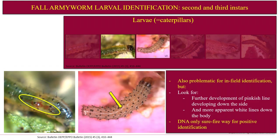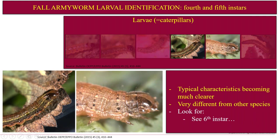Moving on to second and third instars, we see the development of those characters, primarily through the intensification of the pink banding down either side, and those white lines running up and down the body become a little more clear. Again, a very, very spotty body. The fourth and fifth instars are starting to resemble the final instar — that's where you're really starting to see a difference from the early instars, looking more like a classic Frugiperda caterpillar.